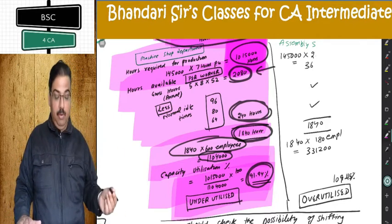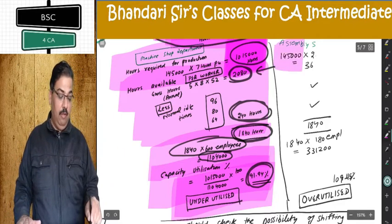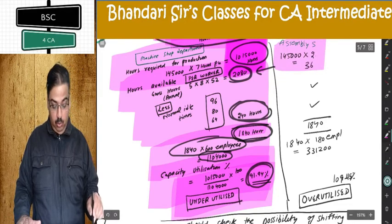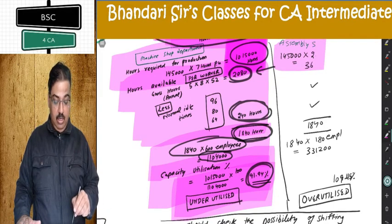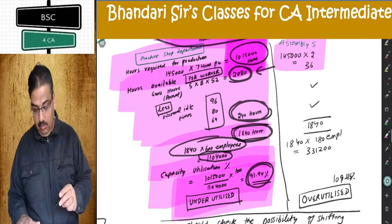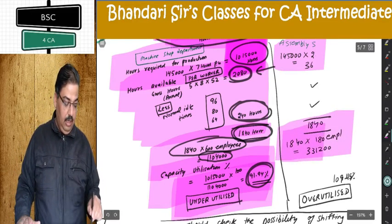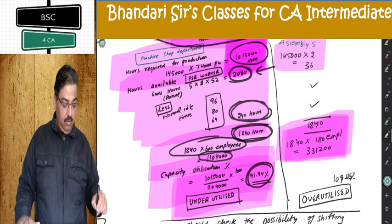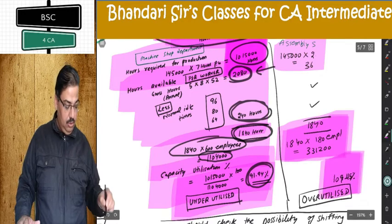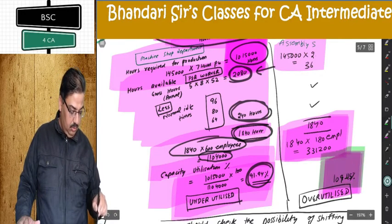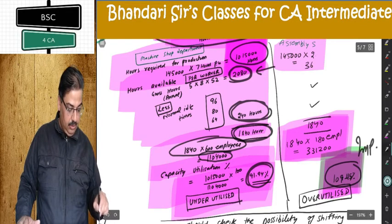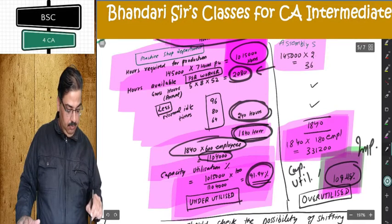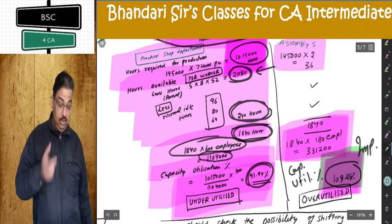Same thing you apply on assembly shop department. 1,45,000 × 2.5 hours; number of workers there is 180; 1,840 × 180 = 3,31,200 hours available. From there, the capacity utilization ratio comes to 109.45% — that is the key result. This is over-utilized.